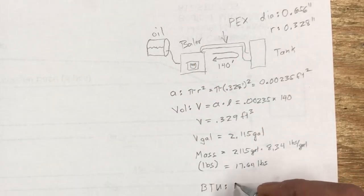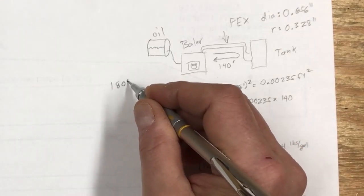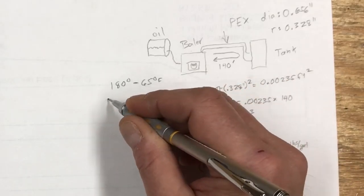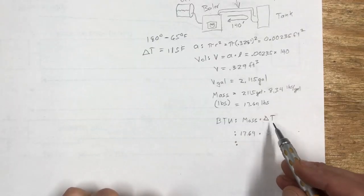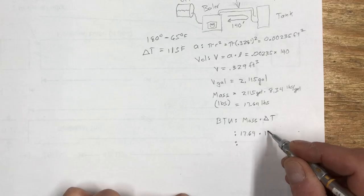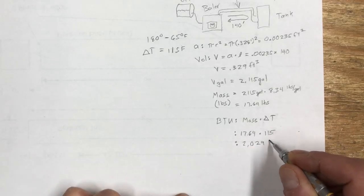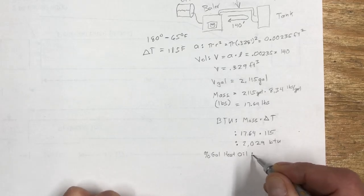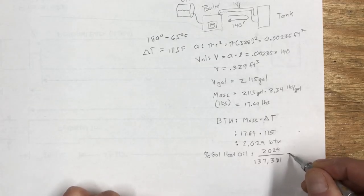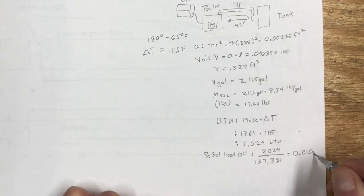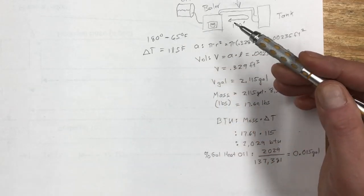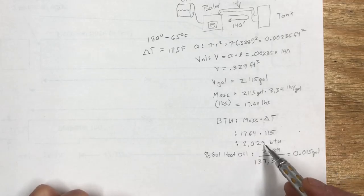And the BTU is the mass times the delta T. My boiler heats the water up to 180 degrees and I'm assuming that it's coming down to an ambient temperature of around 65 degrees and this is all fahrenheit. 115 degrees. If you come down here to calculate the BTU it's the mass times the delta T, so 17.64 times 115 and that turns out to be about 2029 BTU. Now a gallon of home heating oil I discussed in another video is 137,381 BTU in a gallon. So the percentage of a gallon heating oil is 2029 divided by 137,381 and that equals 0.015 gallons. So the amount of heat if this is 180 degrees that sits in these pipes and eventually cools off to 65 degrees is about 0.015 gallons or 2029 BTU.